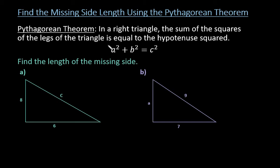The Pythagorean Theorem is only used in a right triangle. The sum of the squares of the legs of the triangle is equal to the hypotenuse squared. So basically, if I have my first leg squared plus my second leg squared, it equals the hypotenuse squared.